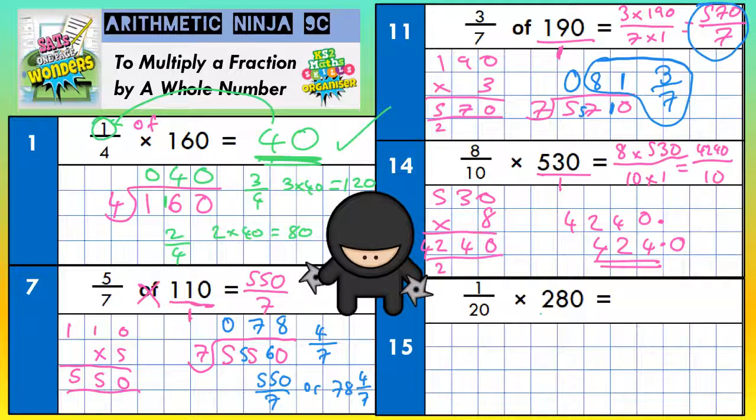Last question, put the invisible divided by 1 in, and go top times top, 1 times 280, bottom times bottom is 20 times 1. Well, this is going to be a reasonably easy one, because 1 times 280 is 280, and 20 times 1 is 20.